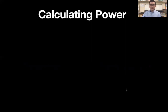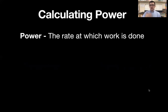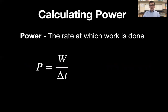Now let's go through formulas for calculating power. Since power is the rate at which work is done, the simplest formula is power equals work divided by time. For example, if there are 10 joules of work done in two seconds, the power is 10 divided by 2, which equals five watts, or five joules per second.